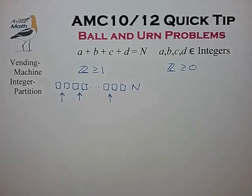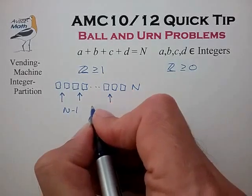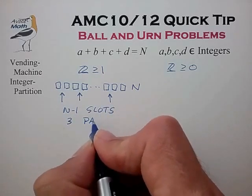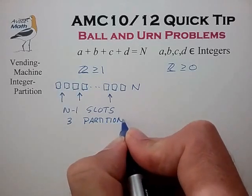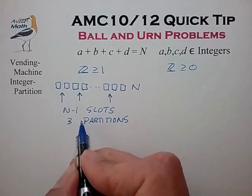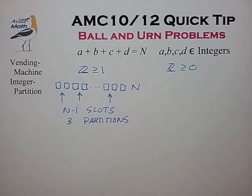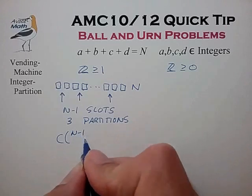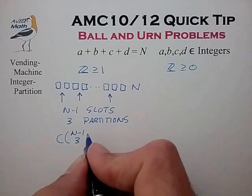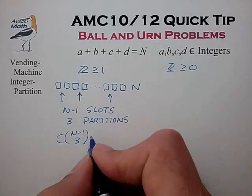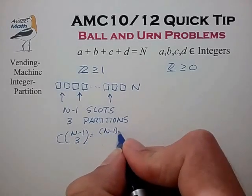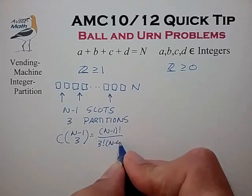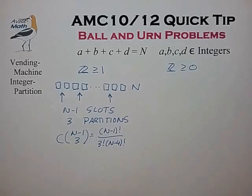So now it looks like we have a pretty simple counting problem. We have n minus 1 slots and three partitions whose locations we must choose within those n minus 1 slots. Most will recognize this as the combination expression C(n-1, 3), which expands to (n-1)! divided by 3! times (n-4)!. But that expansion is not important for our discussion.